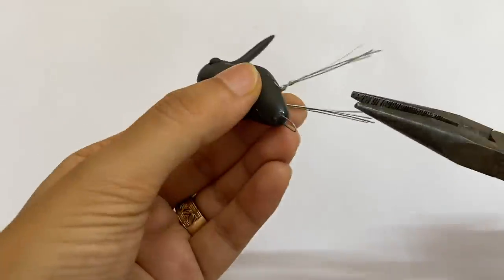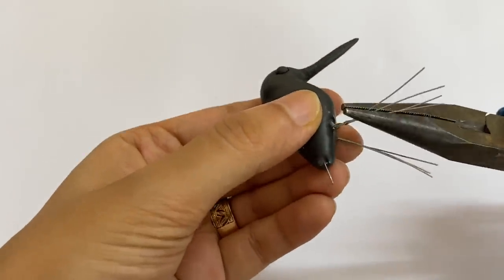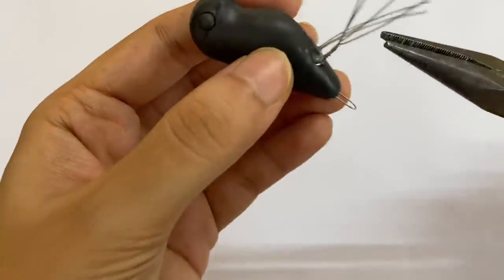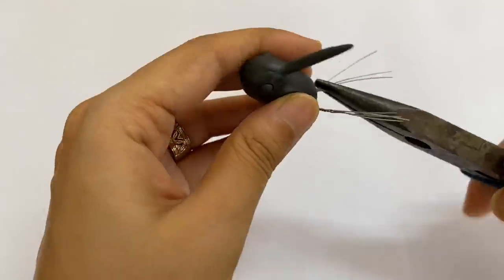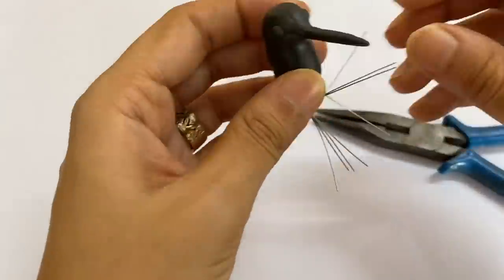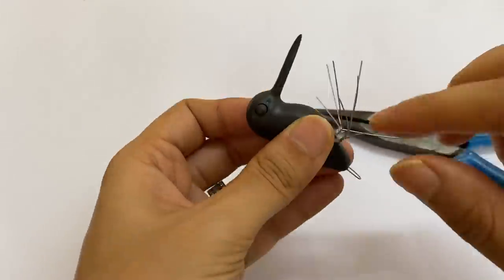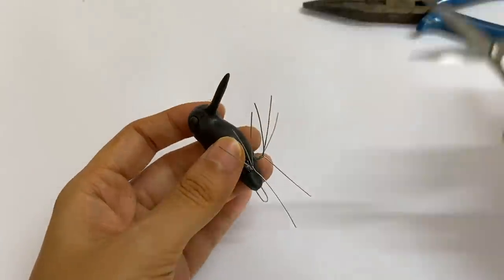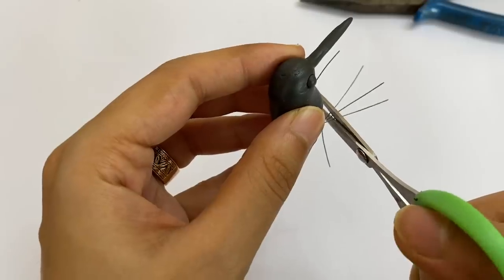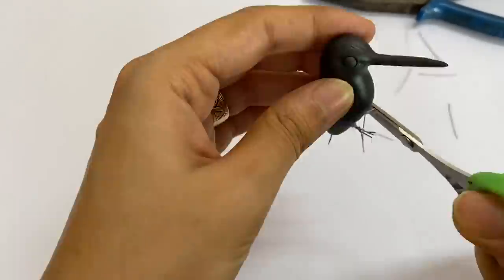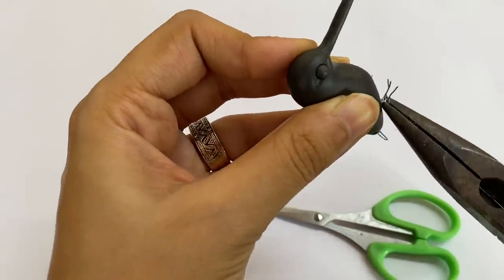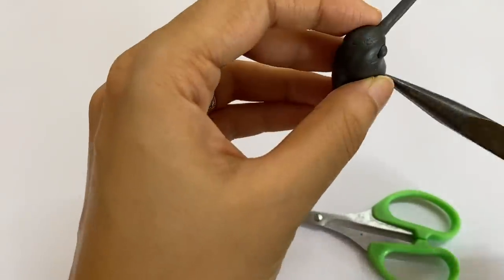Use a nose plier and try to twist the four pieces of wire in one direction. Do this slowly. Once you are satisfied with the length of the leg and how long you want to keep the talons, use a pair of scissors to trim off the excess. Once you have trimmed off the excess, try to curl up the talons using the nose plier. Do this to get the right shape.